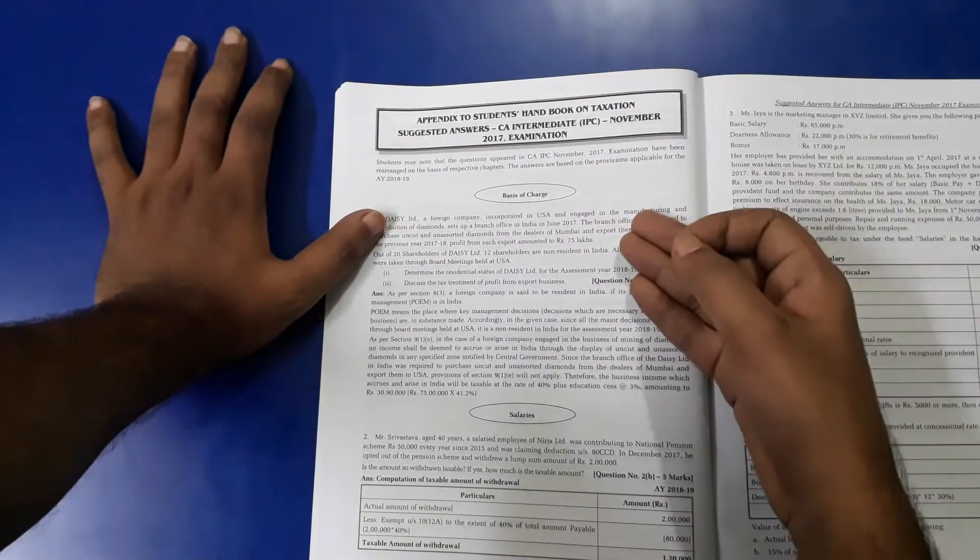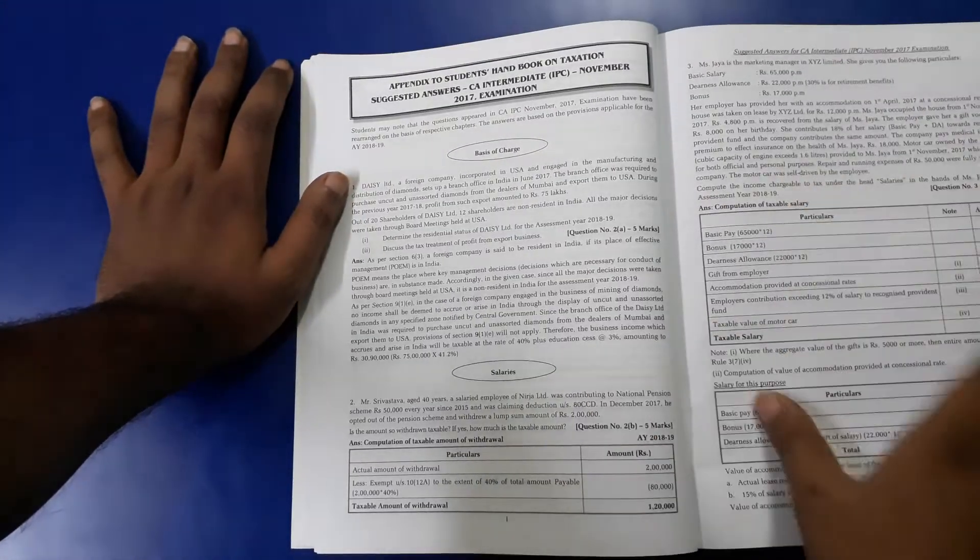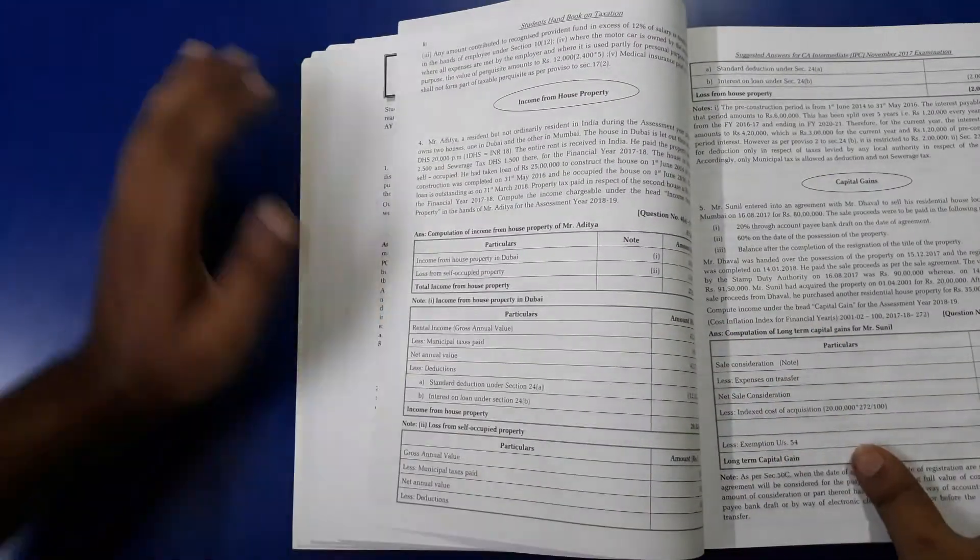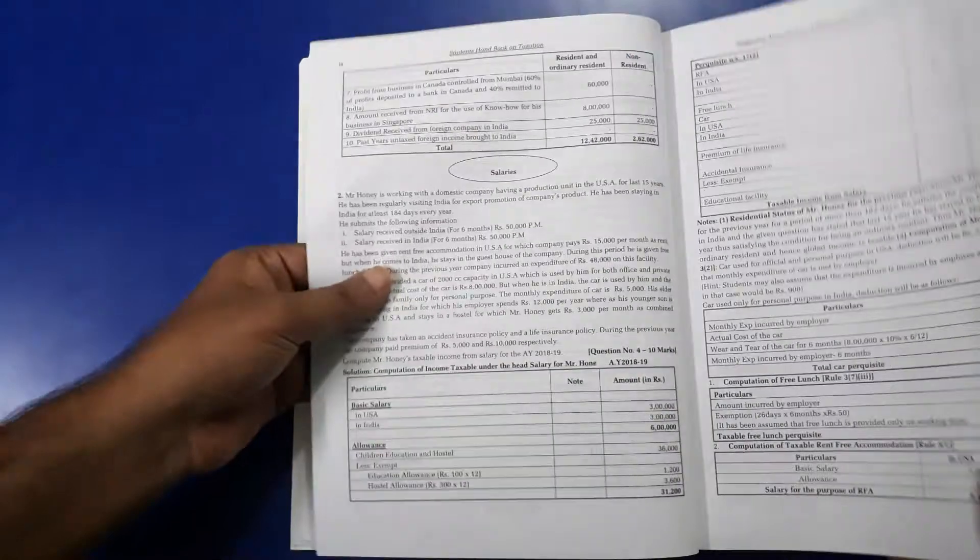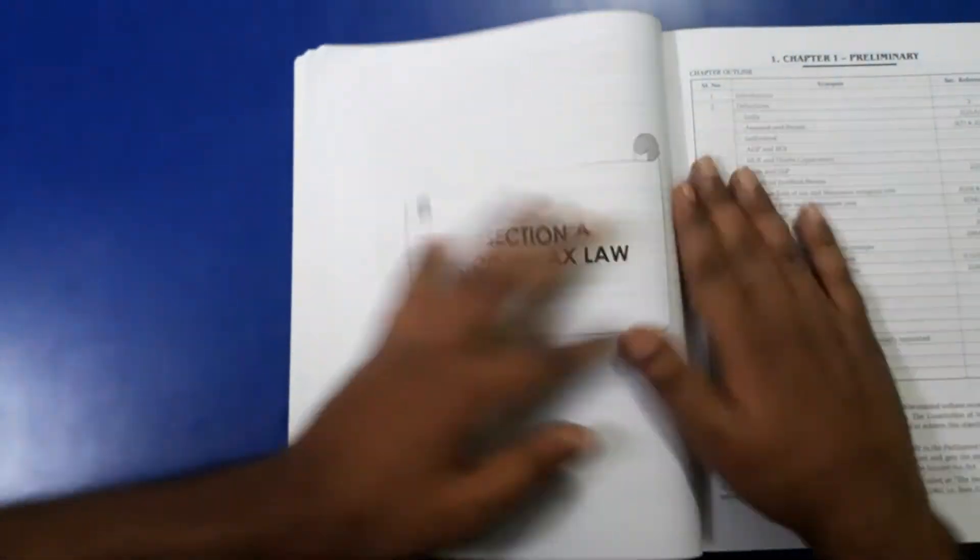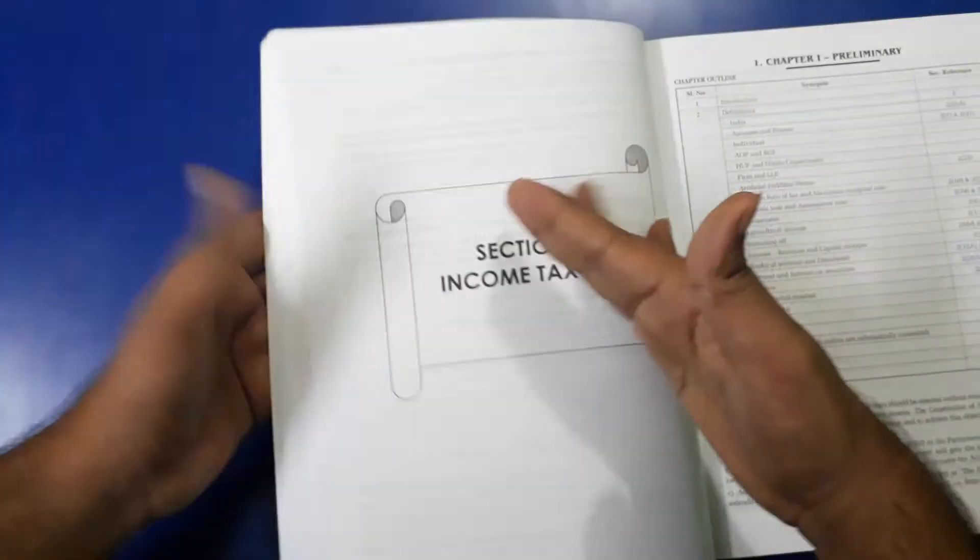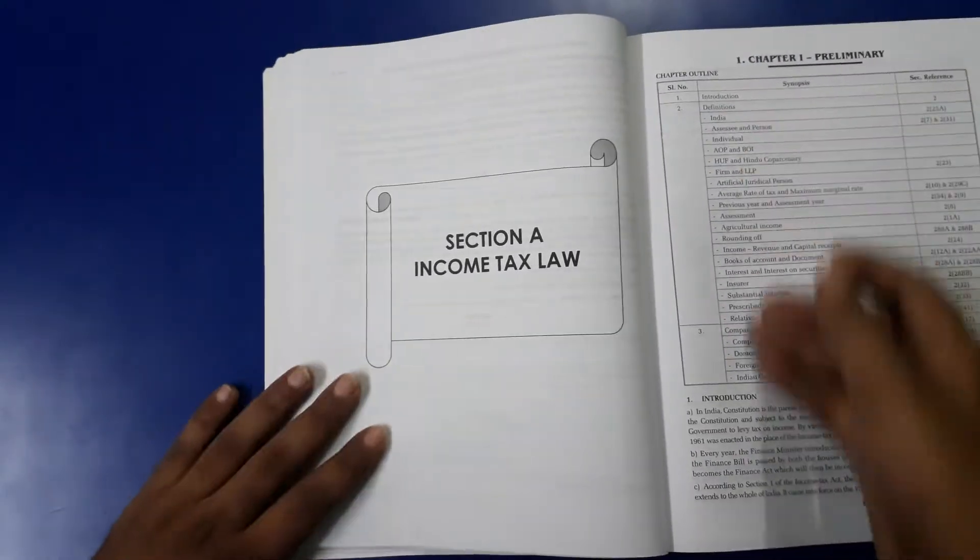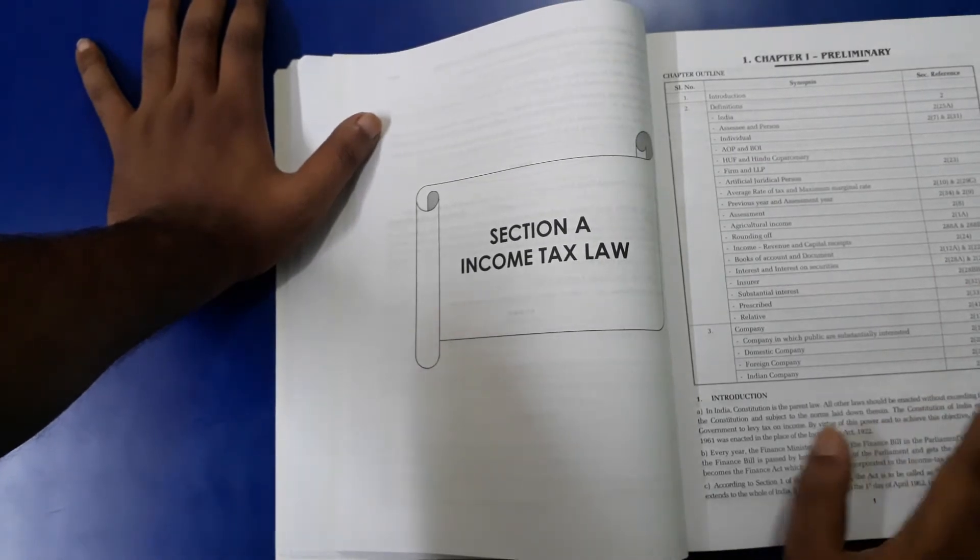Here are the CA Intermediate suggested answers for November 2017 examination. After this, Chapter One starts after so many pages. Here he has explained firstly the topics which you are going to encounter in the chapter.